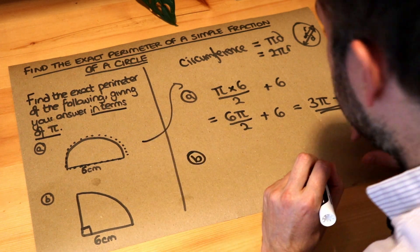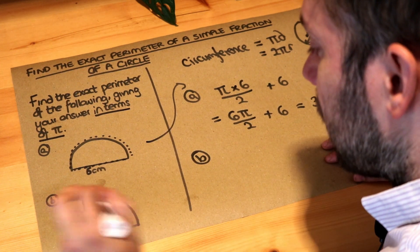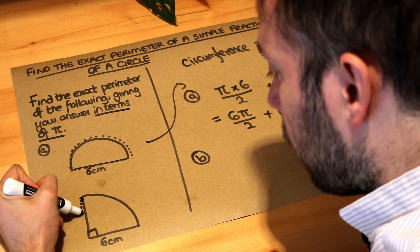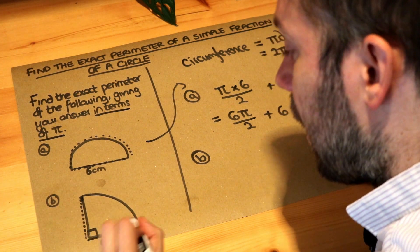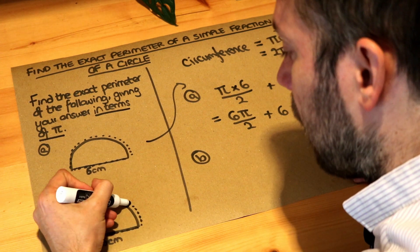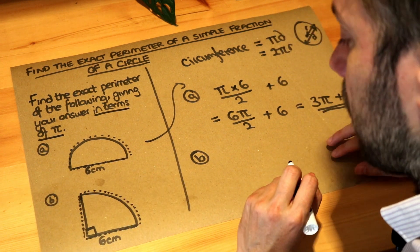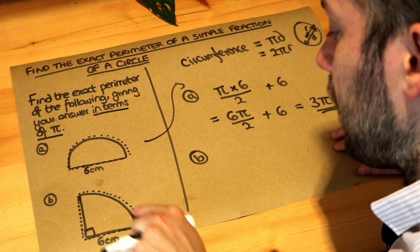Now, b, we need to find this length here. So what's the length there? We need to find that length, which we can see is 6. And then we need to add on this length. That will give us the total of all the lengths around the shape. So let's find this curved length.